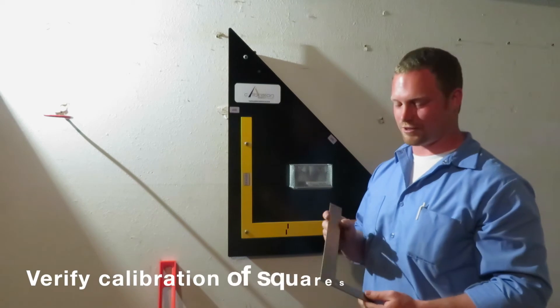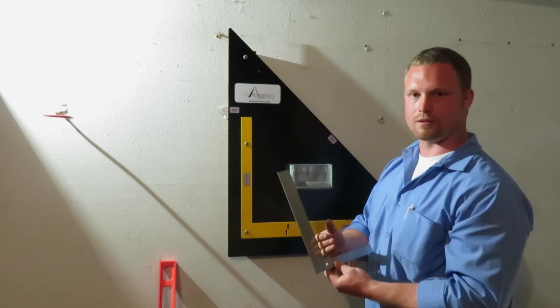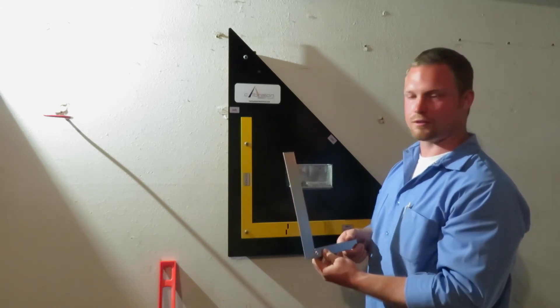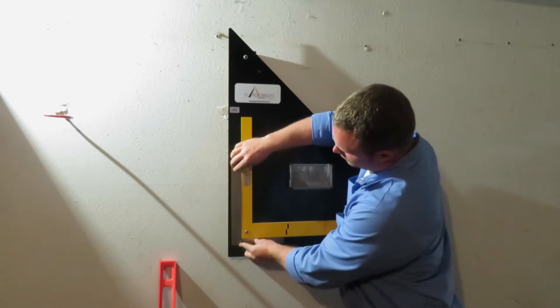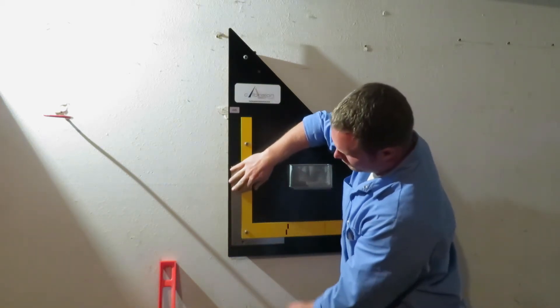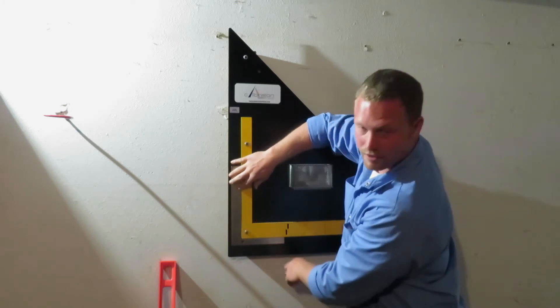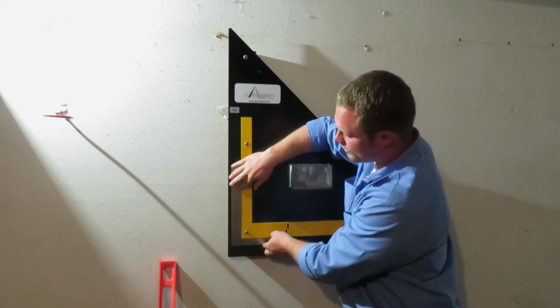So the next tool I'll show you how to calibrate is the square. It's really simple. To calibrate the inside of the square, you'll place it on the outside of the calibration station square. You'll just confirm that it fits up nice and tightly and snug. It hasn't been dropped or heated up, heated and warped or anything like that.